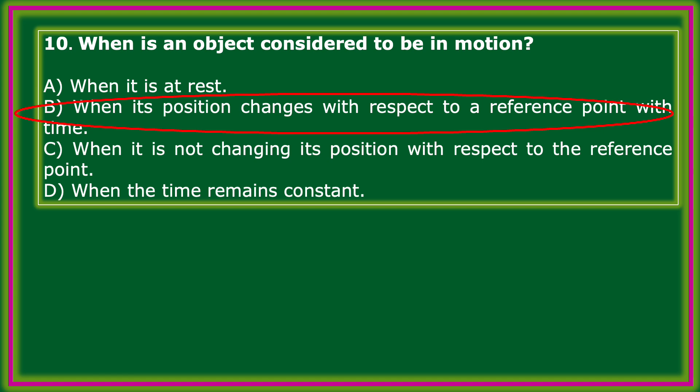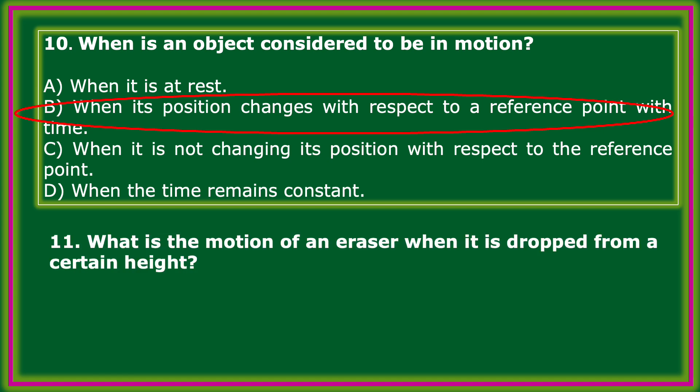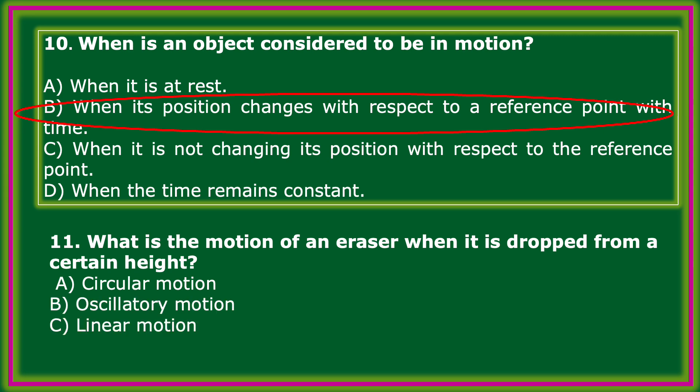What is the motion of an eraser when it is dropped from a certain height? Options: circular motion, oscillatory motion, linear motion, periodic motion. The correct answer: linear motion.